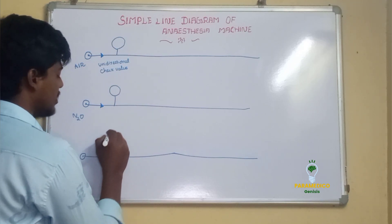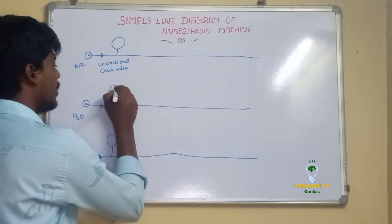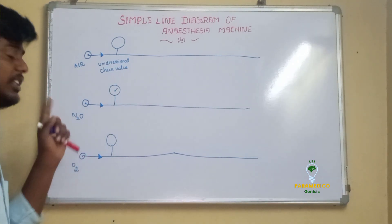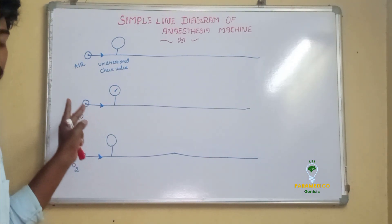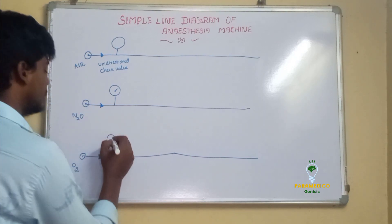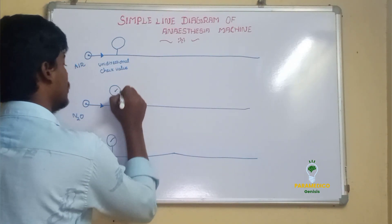After the unidirectional check valve, there is a pressure gauge. The pressure gauge shows what pressure is present in the cylinders — for example, the oxygen pressure in the cylinder. It simply displays the current pressure of the medical gas cylinders.